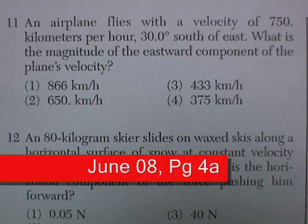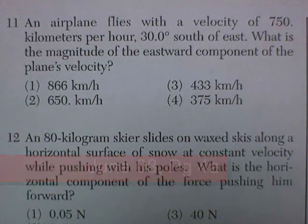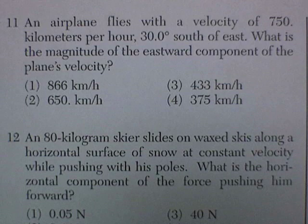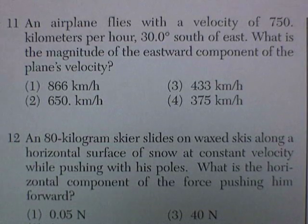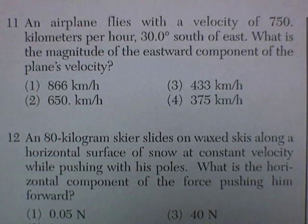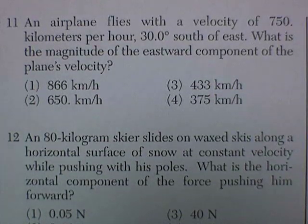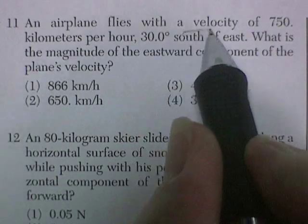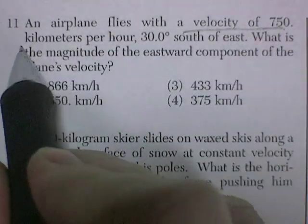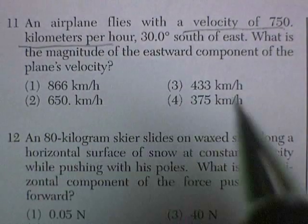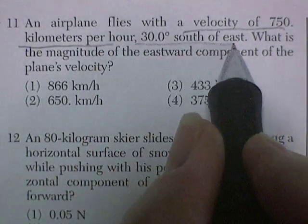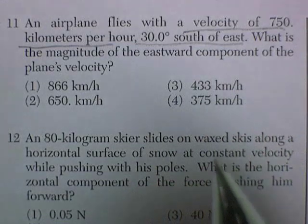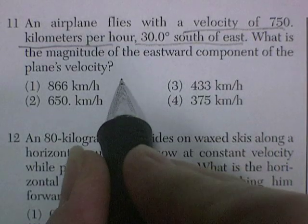This is the June Audit exam, page 4, as much as we can cover in 10 minutes. Question 11. An airplane flies with a velocity of 750 km per hour, 30 degrees south of east.